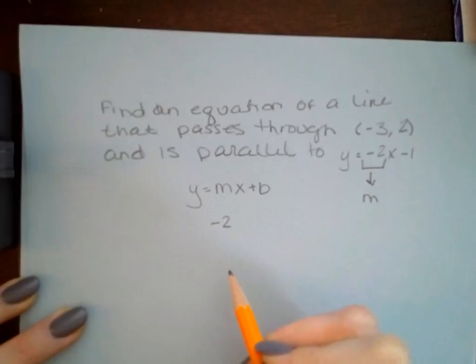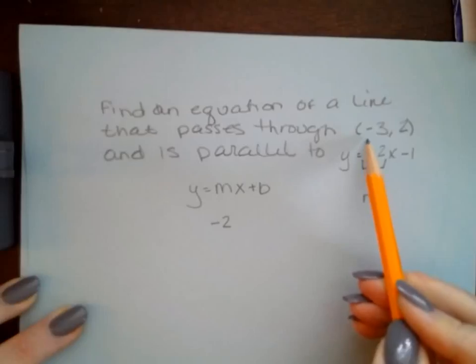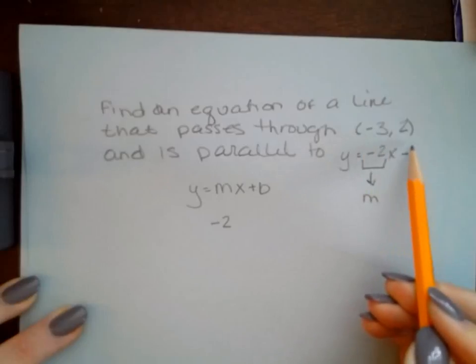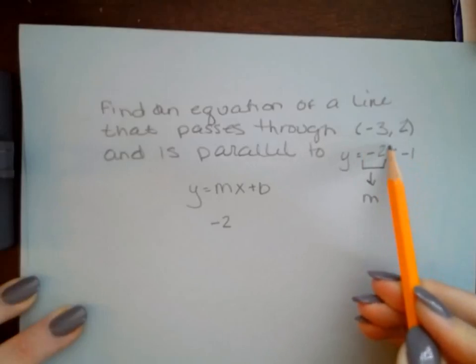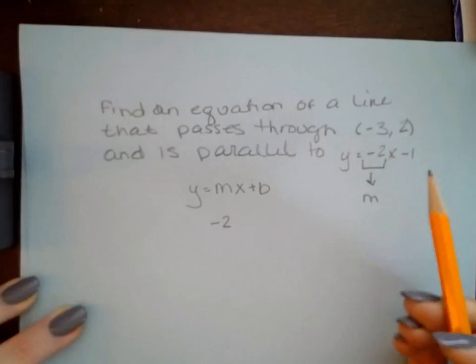Then we need to use the point given to us because we're told that the line passes through (-3, 2). We know that this ordered pair is a solution to the equation that we're going to find.